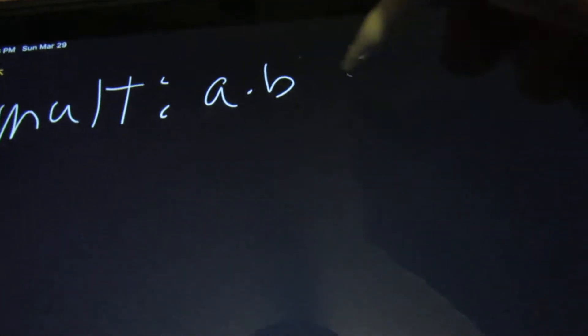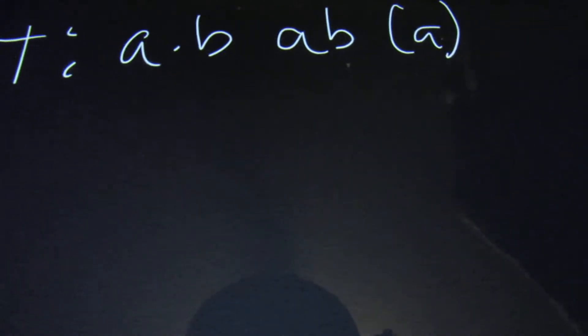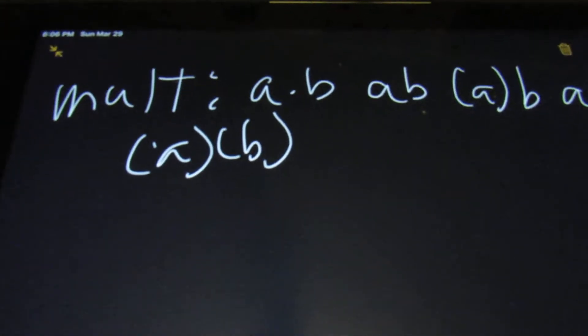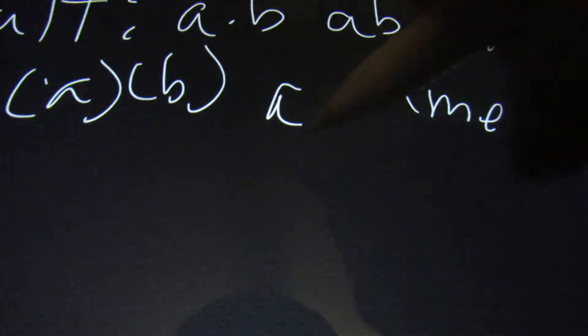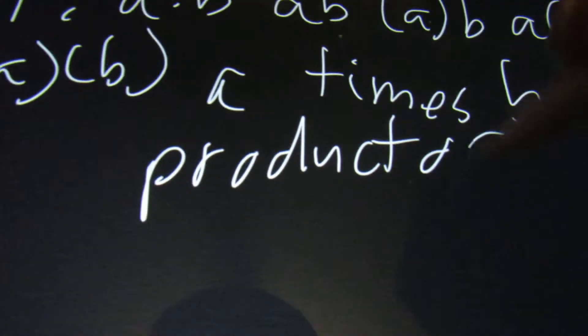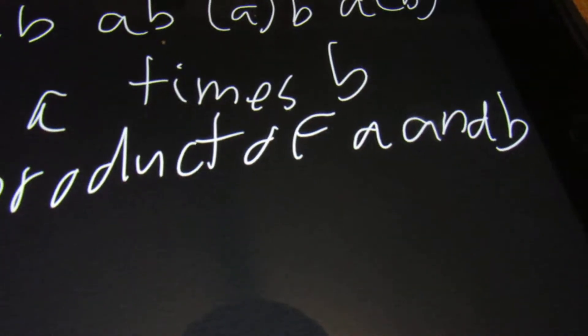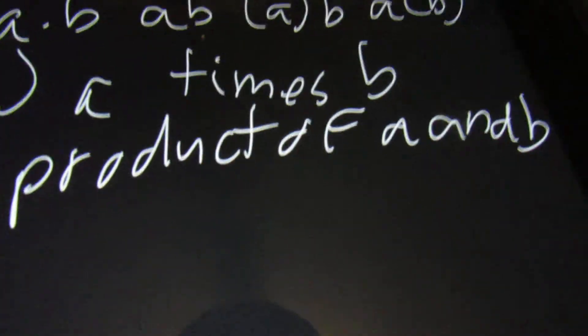Now with multiplication, there are multiple ways to write multiplication. It could be A times B with the dot, it could just be AB, it could be A in parentheses and then B, and then it could be A with B in parentheses, and it could be AB with each in separate parentheses. All of these mean the same thing, and the way to write that is A times B or product of A and B. Whenever you see product, that means multiplying. Also, whenever you see the word of, that means you're going to multiply.